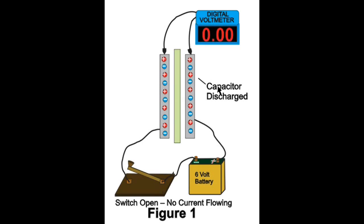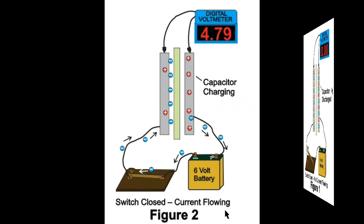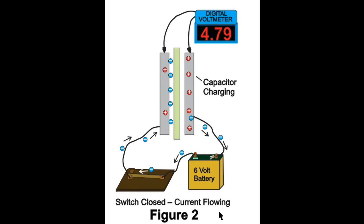In Figure 2, we will show the conditions while the capacitor is charging. Figure 2 shows the switch closed. This allows current to flow into the capacitor. It is assumed here that the switch was closed just moments ago. The voltmeter reading of 4.79 volts implies that the capacitor is nearly fully charged.